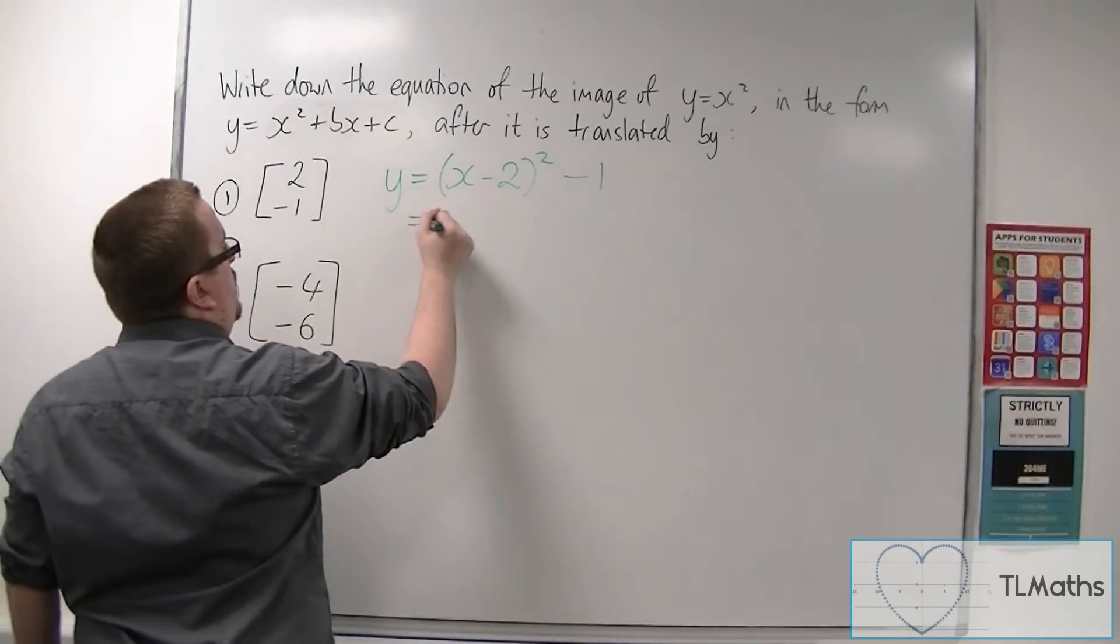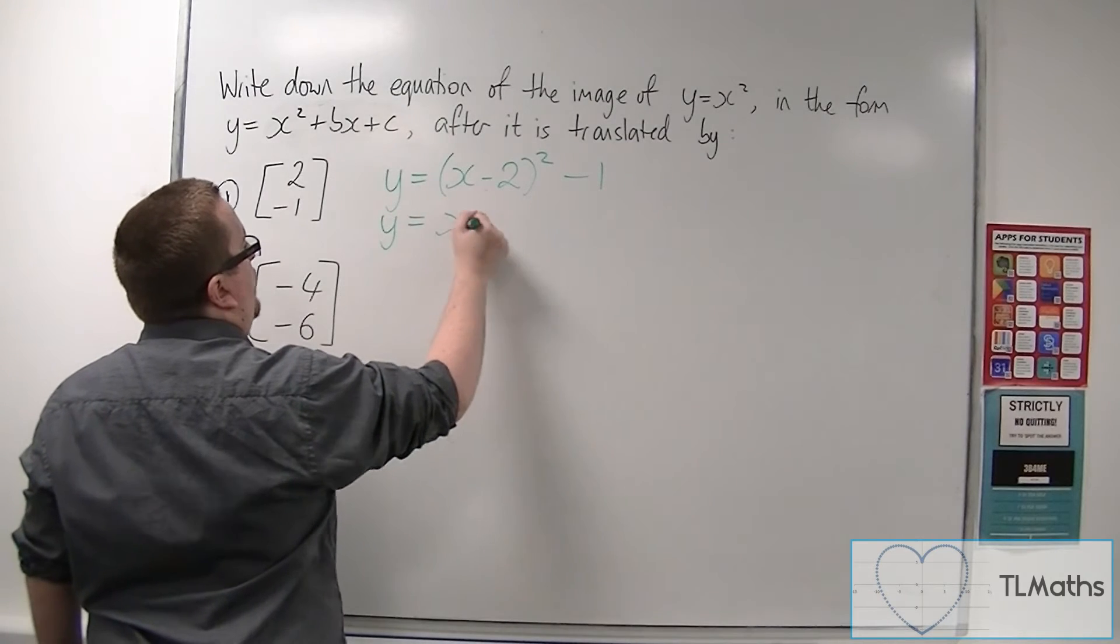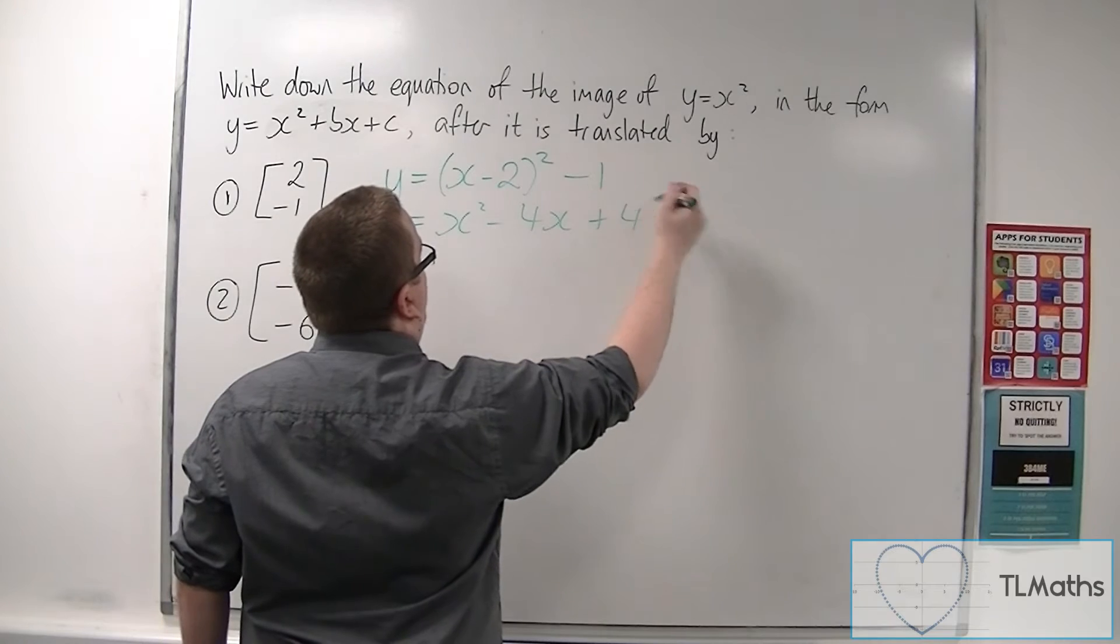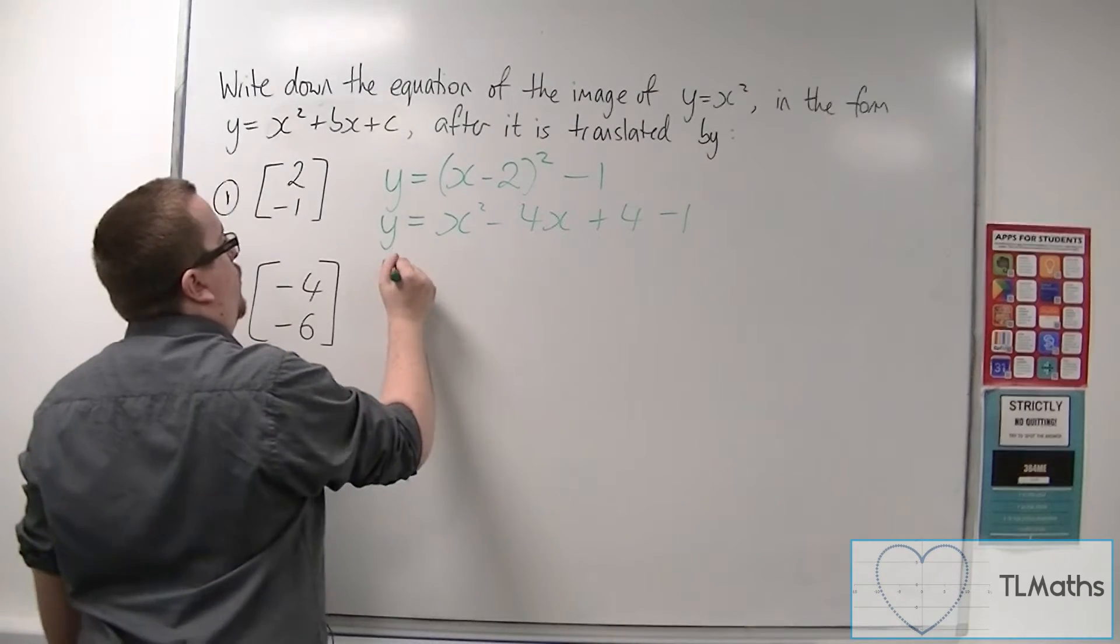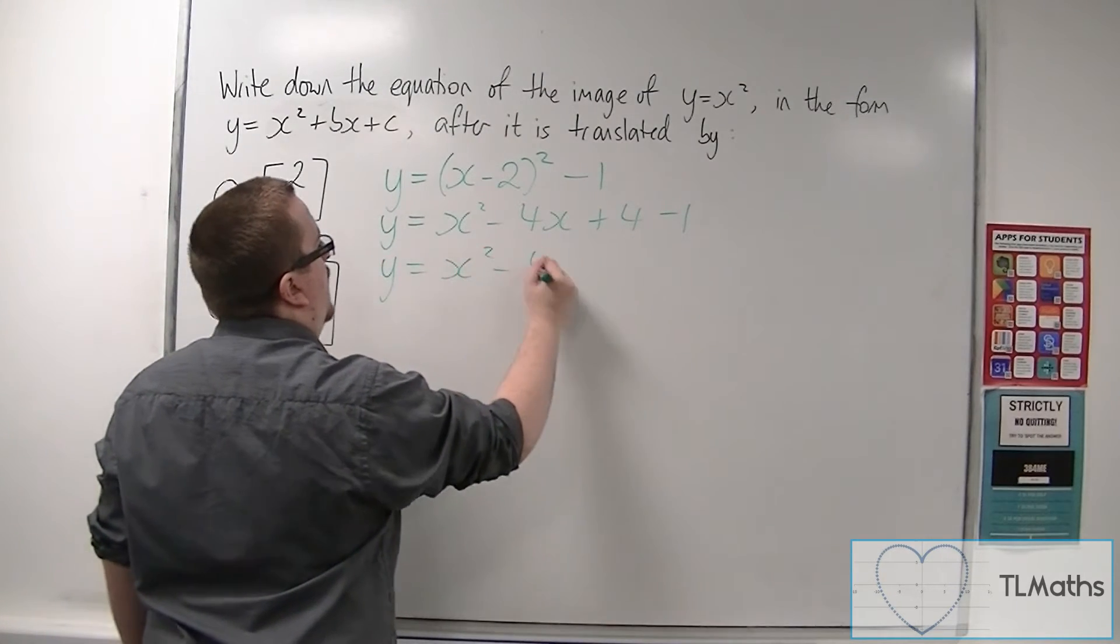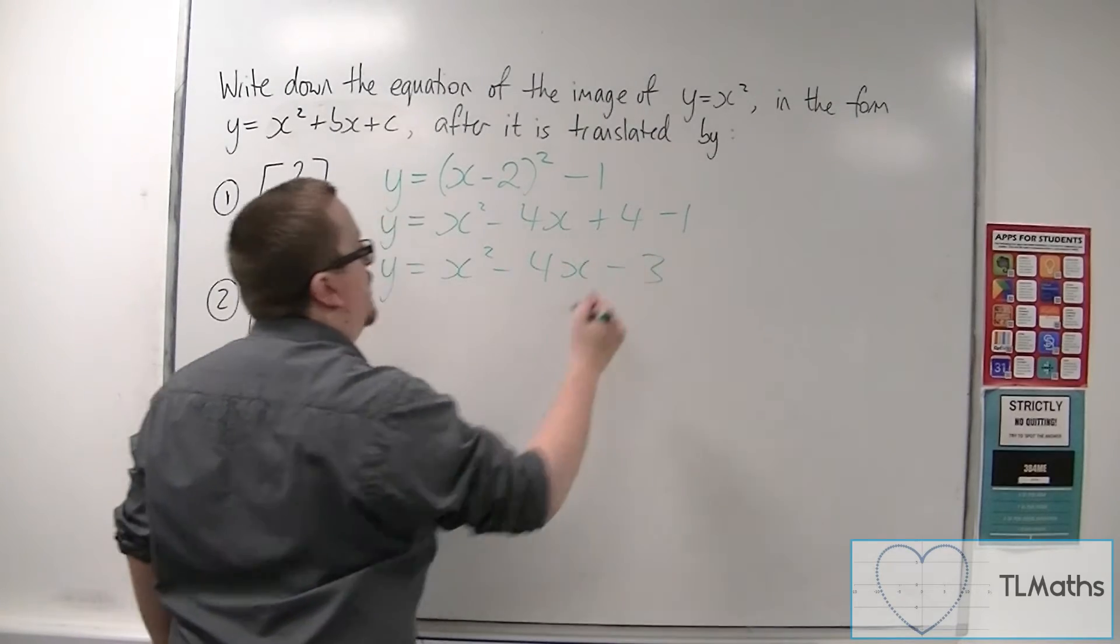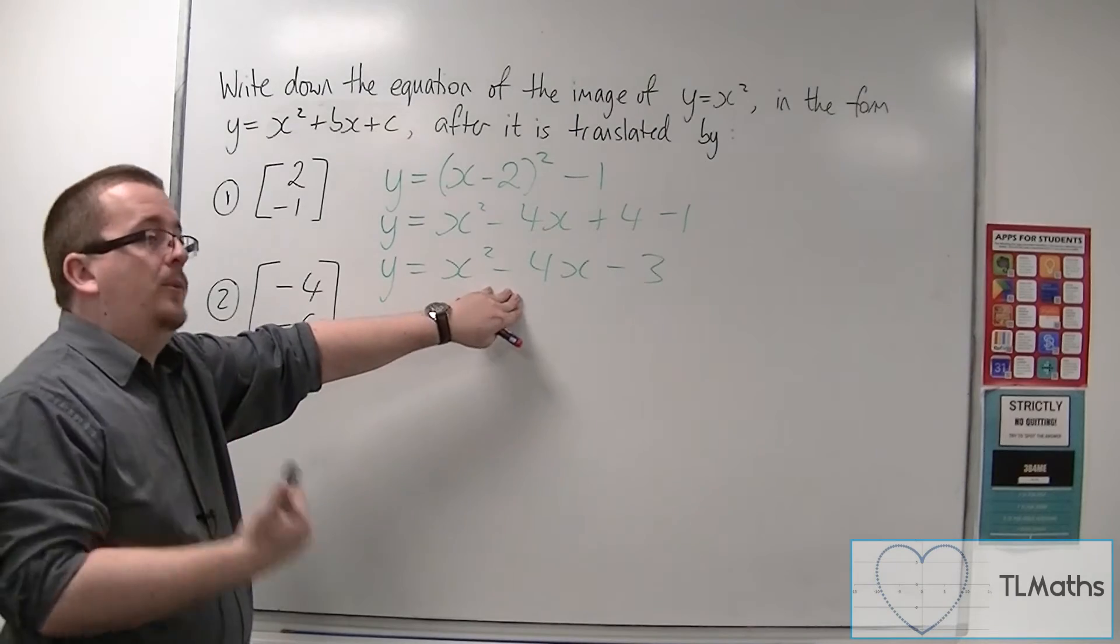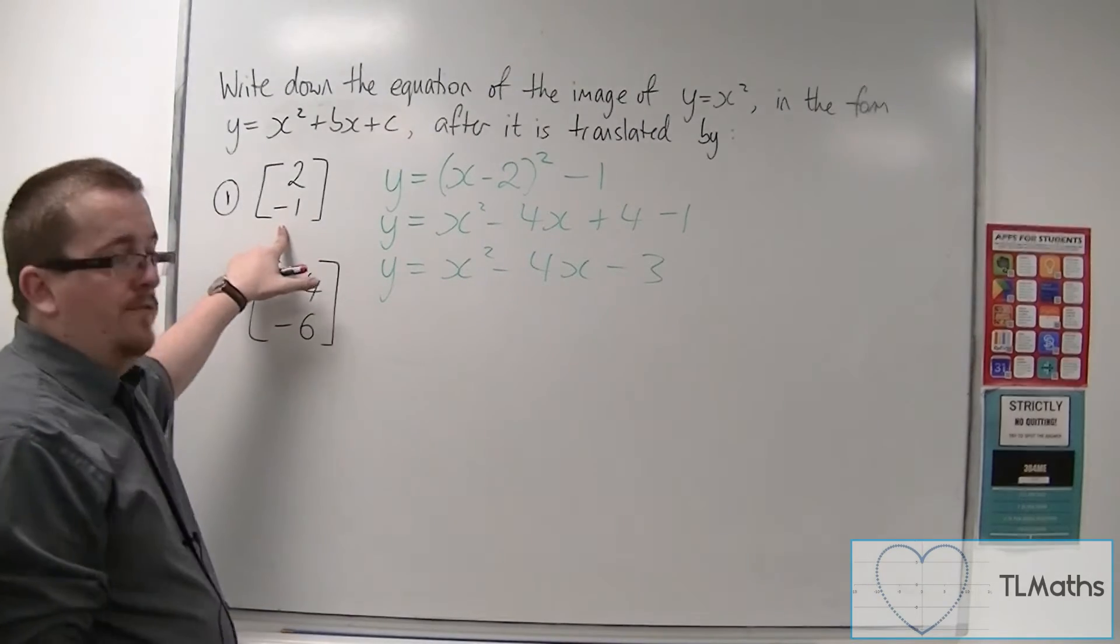And then I can just expand the bracket. So y is equal to x squared minus 4x plus 4 and we've got that take away 1. So y is equal to x squared minus 4x minus 3. And that is the image after y is equal to x squared is translated by that vector.